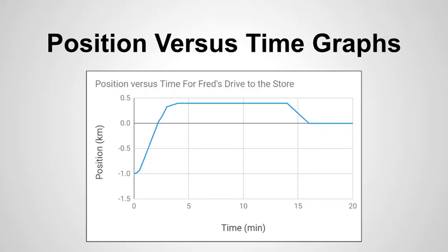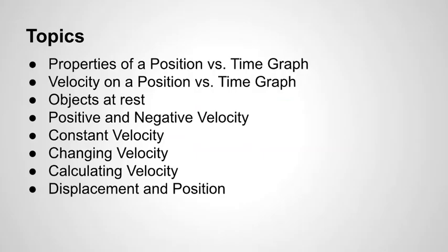Today we're going to talk about position versus time graphs, which is a way that you can represent an object's motion. The topics we're going to cover include properties of a position versus time graph, velocity on a position versus time graph, objects at rest, positive and negative velocity, constant velocity, changing velocity, how to calculate velocity, and displacement and position.